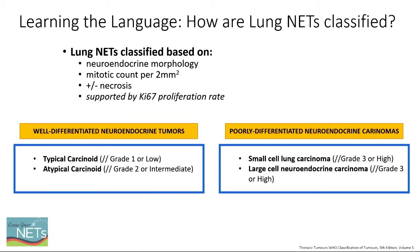There are two main categories of lung neuroendocrine tumors. On the right, we have poorly differentiated neuroendocrine carcinomas, which includes small cell lung cancer and large cell neuroendocrine carcinoma. On the left, we have well-differentiated neuroendocrine tumors, which will be the focus of this talk, examining both typical carcinoid tumor and atypical carcinoid tumor.